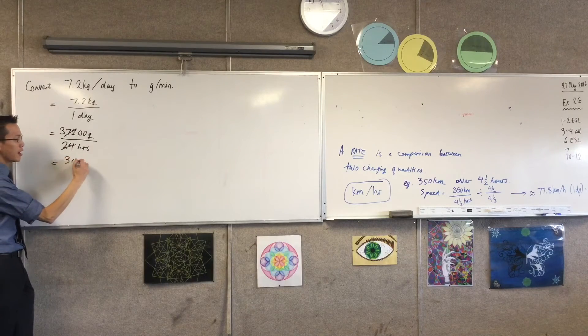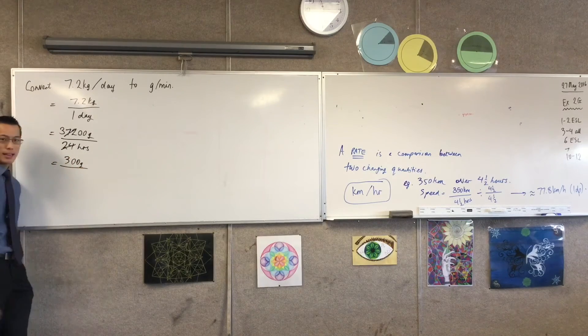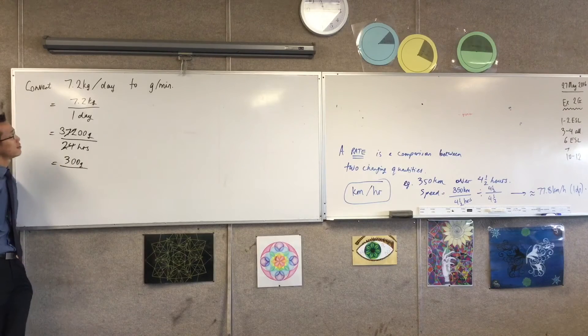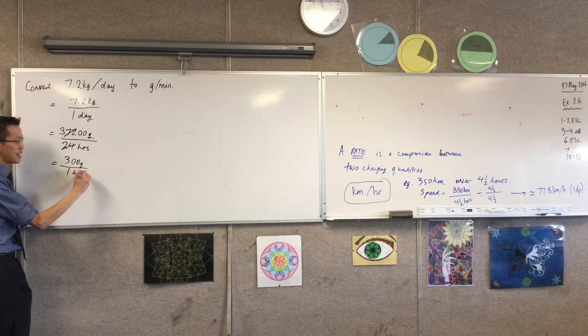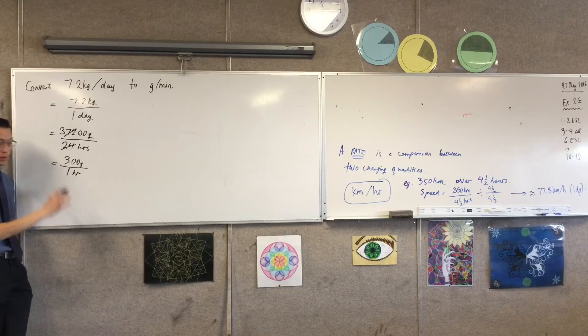So 300 grams is, whatever, moved, eaten, consumed within one hour. Does that make sense? You see I've divided everything by 24?